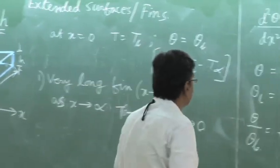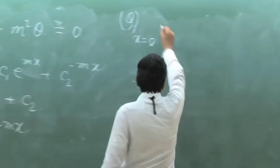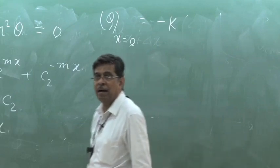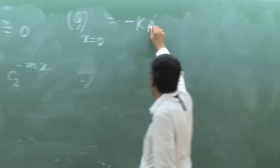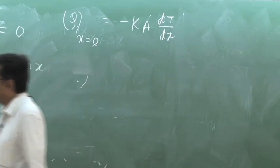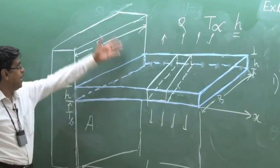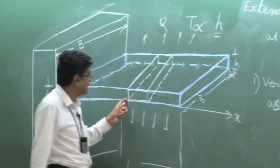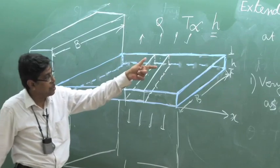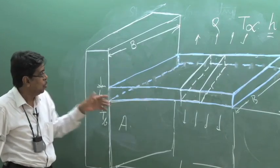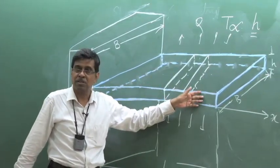That means how much heat is it extracting from the base? It is simply minus k times area times dT/dx. This area is the cross-sectional area of the fin — not the wall area mentioned earlier. Do not get confused. We are considering a rectangular fin having constant cross-sectional area A.